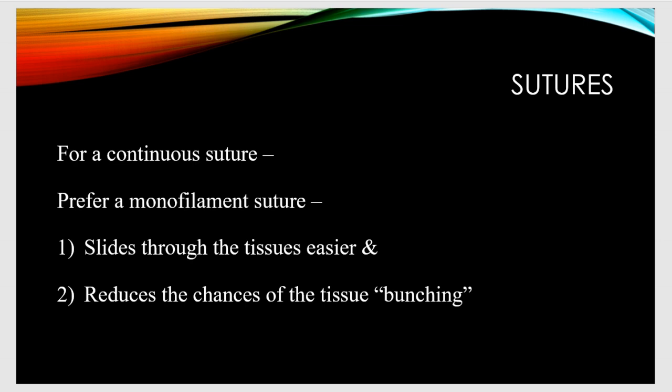In some indications, if we are placing a continuous suture, we always prefer a monofilament suture if available. The reason is that monofilament suture slides through the tissue very easily, and it also reduces the chances of tissue bunching — easy sliding and less tissue bunching with monofilament sutures while placing a continuous suture.